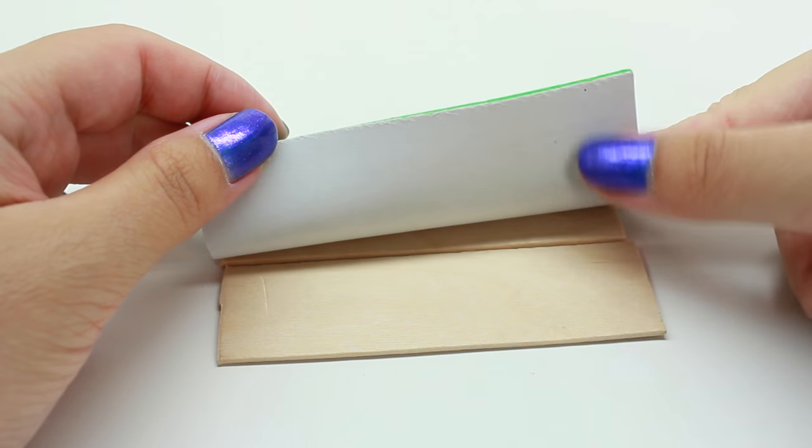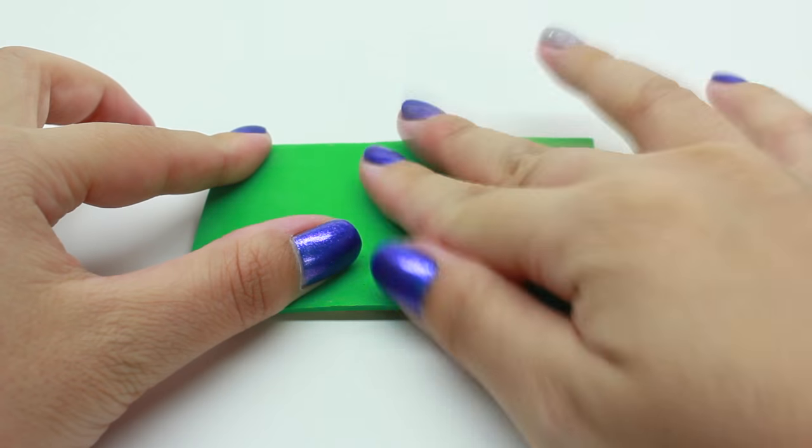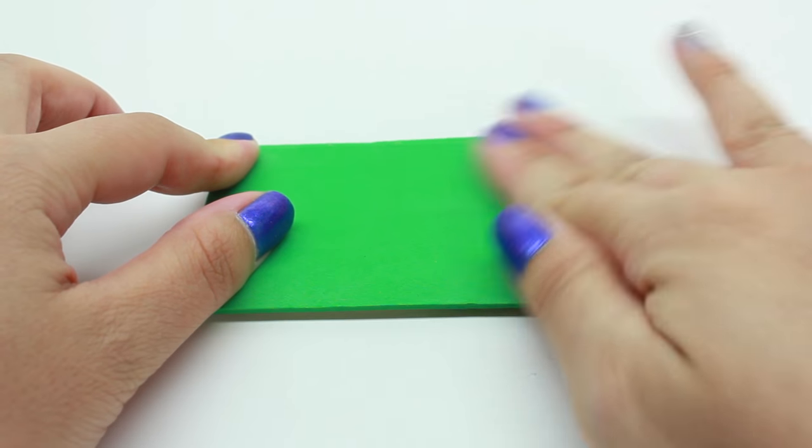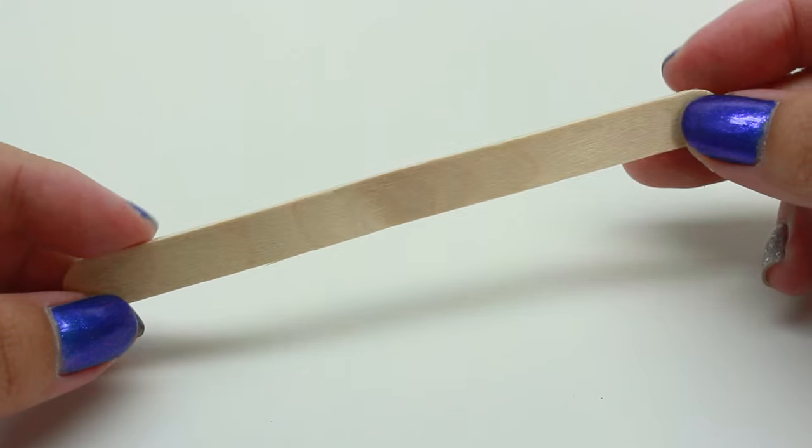Now take a small popsicle stick and go ahead and cut it into thirds. This is what you should have.